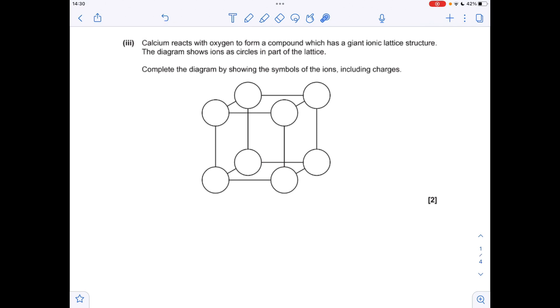Moving on to the next part, obviously we're going to form calcium oxide if calcium reacts with oxygen. So we just need to put the ions into the relevant circles. Calcium forms a 2 plus ion, oxygen forms the O2 minus ion. We just need to make sure that we have opposite charges next to each other.